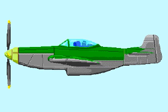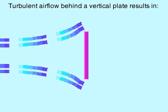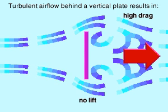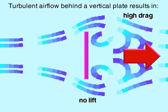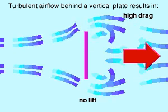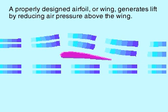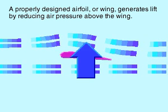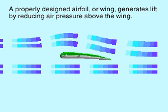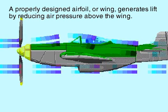Airplanes are designed around wings, and wings are designed according to the rules of aerodynamics. If a vertical plate is subjected to fast-moving air, a turbulent and chaotic airflow will occur as air passes by. But if this plate is rotated toward the direction of the airflow and turned into an airfoil, with a curved upper surface and a flat lower surface, lift will result from a reduced air pressure that occurs above the wing.